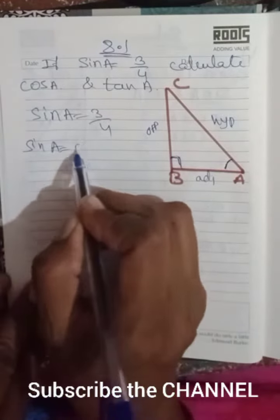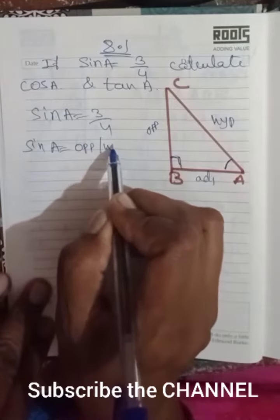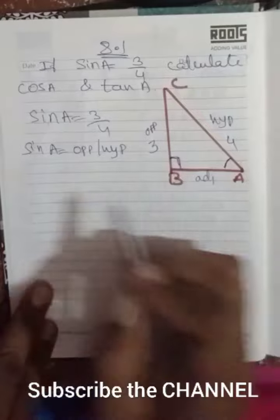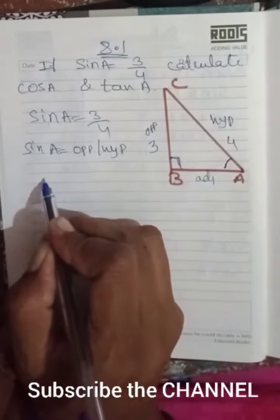Sine theta equals opposite over hypotenuse, right? So that means you are given: the opposite is 3 and the hypotenuse is 4. Very simple - we go with the Pythagorean theorem.